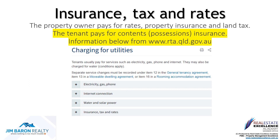During the tenancy agreement, it is your responsibility to pay for your own contents and possessions insurance. Refer to the terms of the agreement in relation to electricity, gas, phone, internet, water, or solar power to ensure you are aware of all your responsibilities and requirements for connections of such services. The property owner pays for rates, property insurance, and land tax. Our agency strongly recommends that you ensure you have contents and possessions insurance.